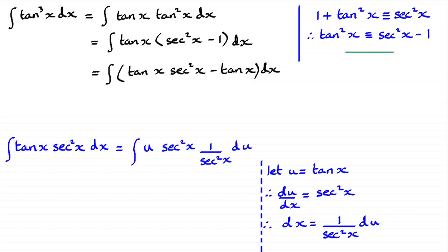So if I substitute those values in, that's what we get. And you can see the two sec squared x's cancel out, and that leaves you with the integral of u du.